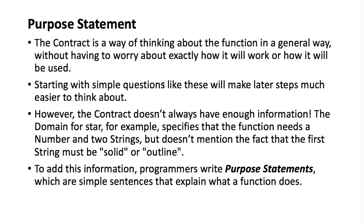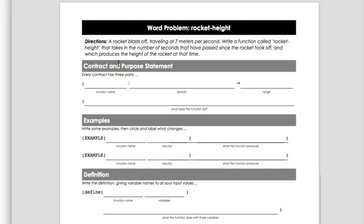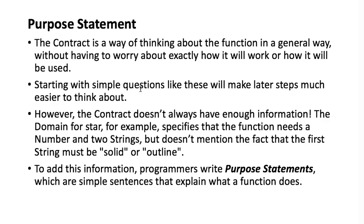One new thing we're going to learn about today is the purpose statement. The contract is a way of thinking about a function in a general way without having to worry about exactly how it would work or how it would be used. For this problem, the name was rocket-height, it takes in a number of seconds — just a number — and produces the height of the rocket, which is also a number. Starting with simple questions like that makes later steps easier to think about. That's the great thing about this design process.